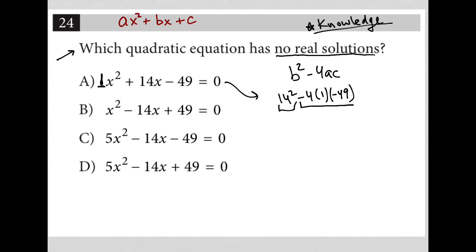This is going to be positive. Negative 4 times 1 is negative 4. Negative 4 times negative 49 is positive something. So I'm going to have 14 squared plus that, right? So it's not going to be less than zero. Because again, less than zero basically just means negative. So we're looking for an answer that's going to be negative, okay?